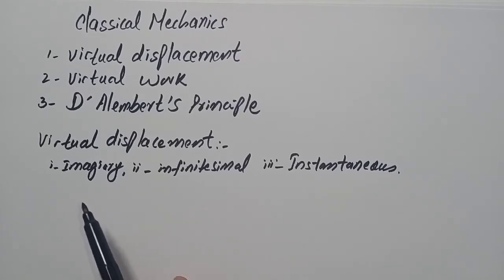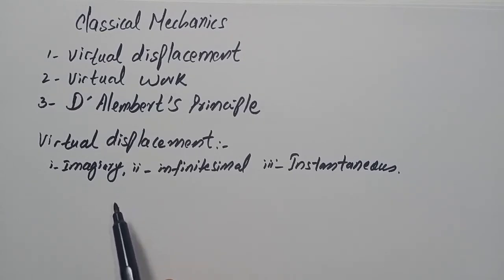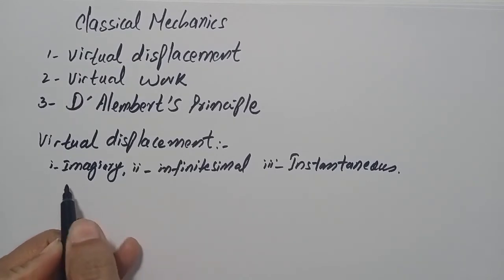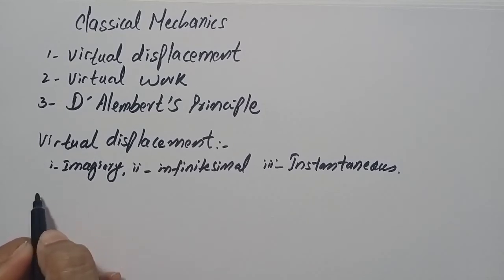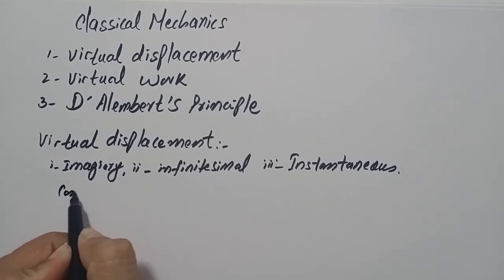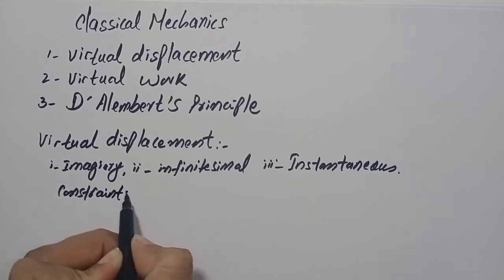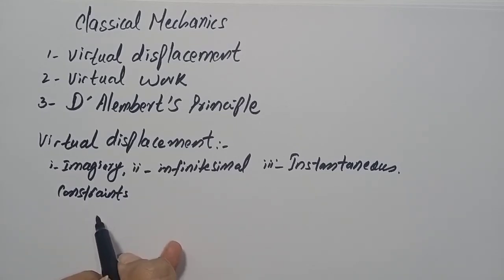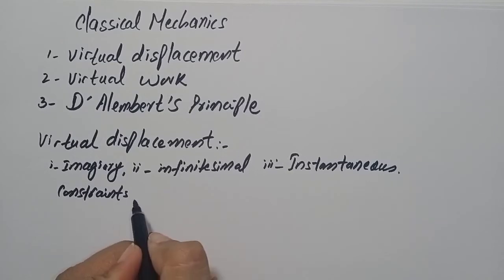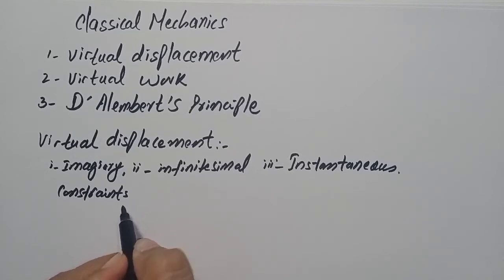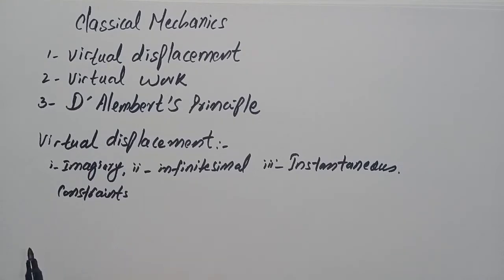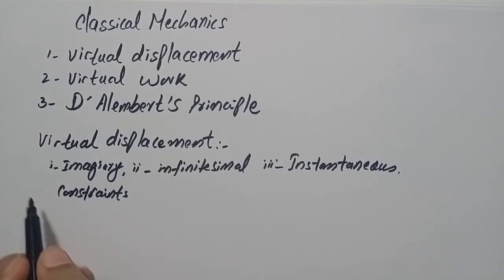The virtual displacements are given to the system in such a manner that the constraint forces do not do any work. This is the main property of virtual displacement — in the presence of constraints, virtual displacements do not perform any work on the physical system.